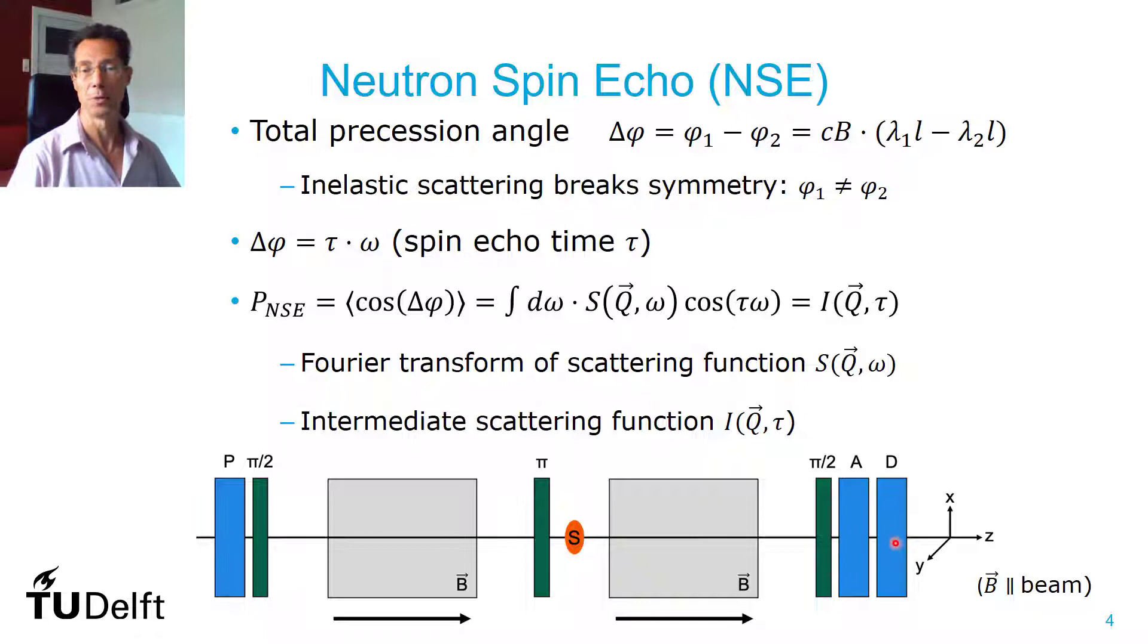Now, if you have inelastic scattering, then the phase in the first arm and in the second arm will be different, due to the difference in wavelength. So inelastic scattering breaks the symmetry of the setup.